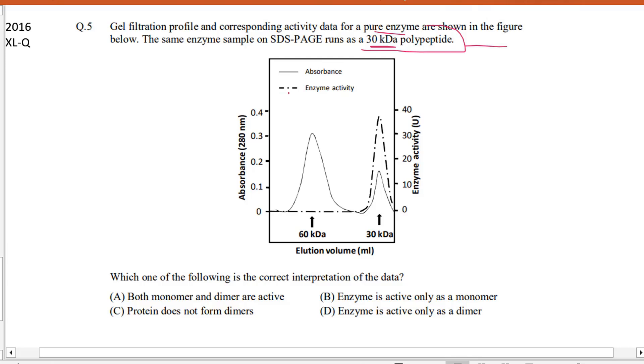So we have two forms of the protein: we have 60 kilodalton and 30 kilodalton which is the monomer. And as 60 kilodalton is given, therefore the protein can also exist as a dimer.